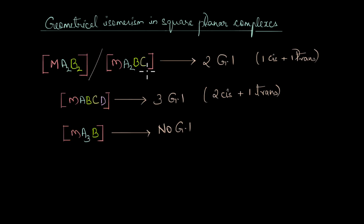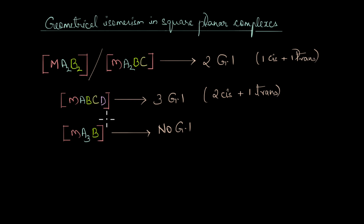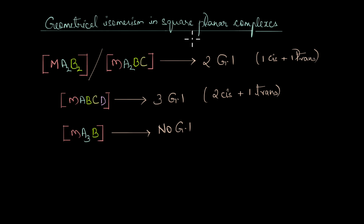To summarize, in square planar complexes of the type MA2B2 and MA2BC, we get two geometrical isomers — one cis and one trans. In MABCD, where the metal is bonded to four different monodentate ligands, we get three geometrical isomers — two cis and one trans. Complexes of the type MA3B do not exhibit any geometrical isomerism. In the next video, we will talk about geometrical isomerism in octahedral complexes.